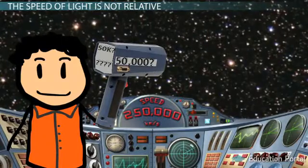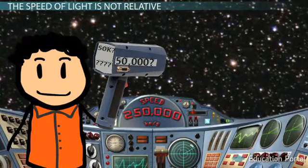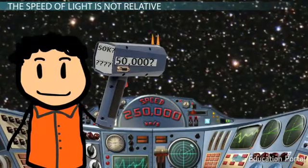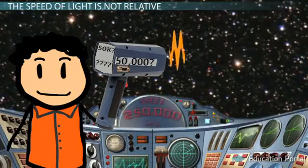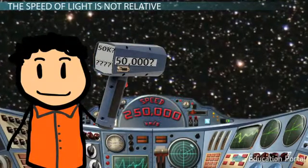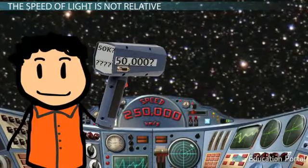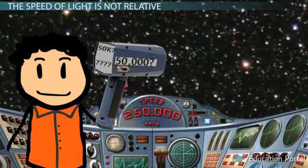As your ship is already traveling 250,000 kilometers per second and 300,000 kilometers per second minus 250,000 kilometers per second is 50,000 kilometers per second.